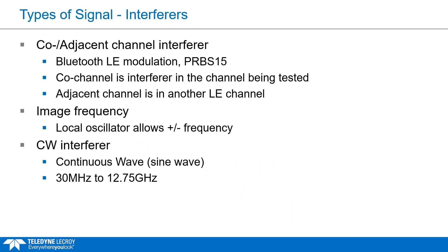Beyond the wanted signal, there are two main types of interferer. The first is an LE modulated signal simulating LE signals from other nearby devices, using a PRBS15 pattern. This can be co-channel, where the interferer is on the same channel, or adjacent channel, covering another channel within the LE band, and also includes the image frequency discussed earlier. The second is a continuous wave interferer, which can range from 30 MHz up to 12.75 GHz.